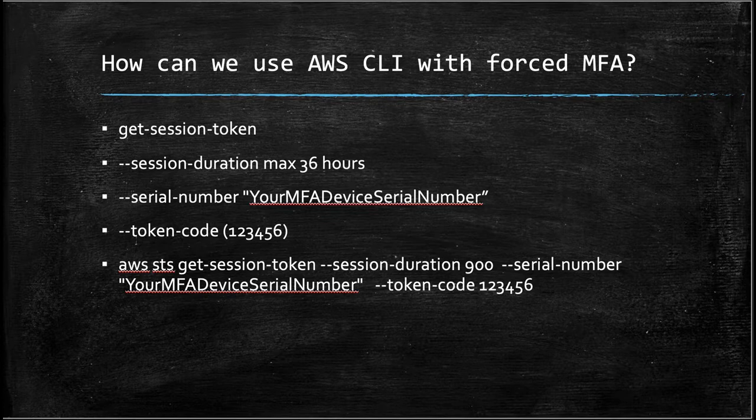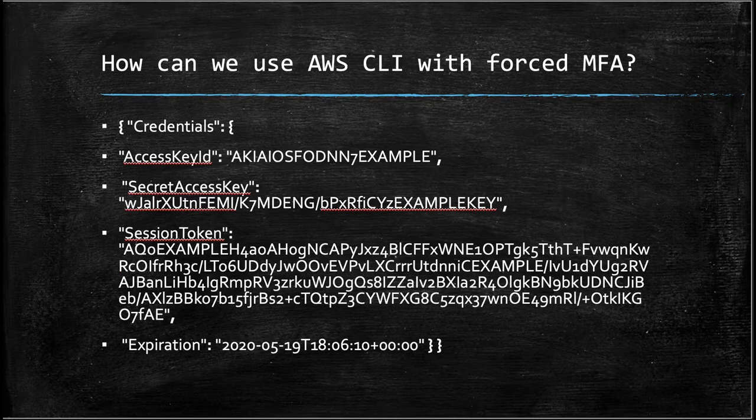The command would be: AWS STS get-session-token, with session duration, serial number, and token code. The output will be your temporary credentials: access key ID and secret access key.